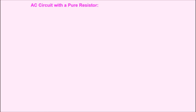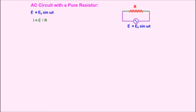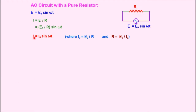First we study the AC circuit with a pure resistor. There is a circuit of external resistance R connected with an alternating current source E equal to E naught sin omega t. Applying Ohm's law, the current in the circuit is E divided by R, so we can substitute the value of EMF to get I equals E naught by R times sin omega t, where E naught by R is the peak value of current I naught. Observing this, the phase of EMF and current is the same.